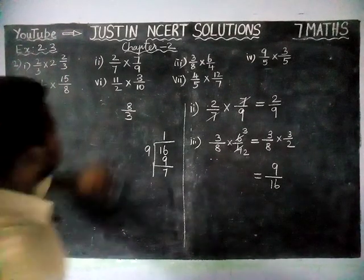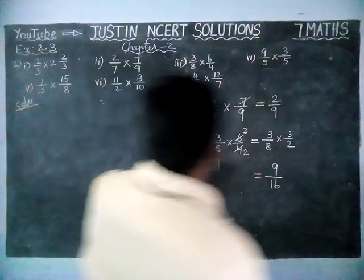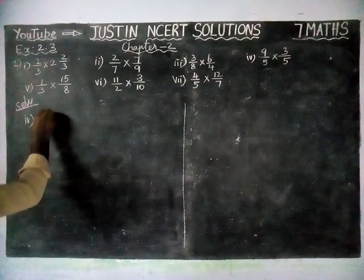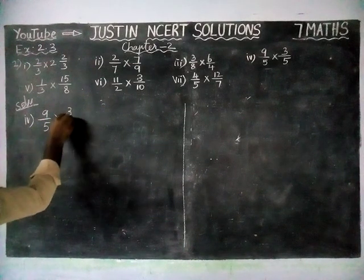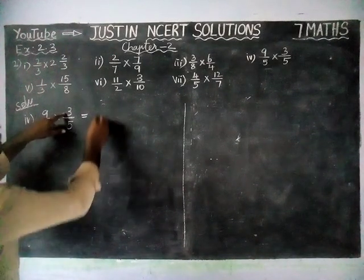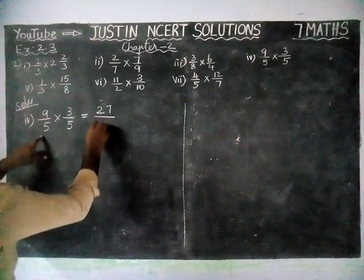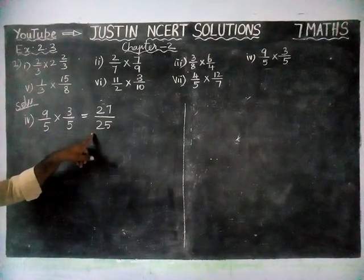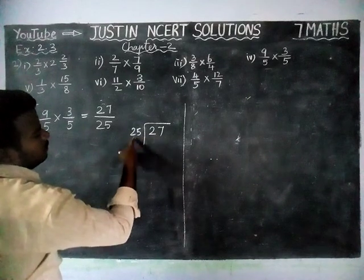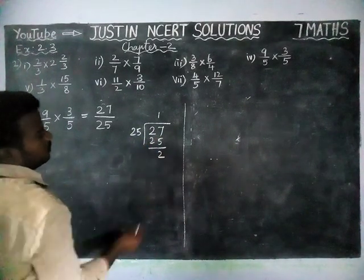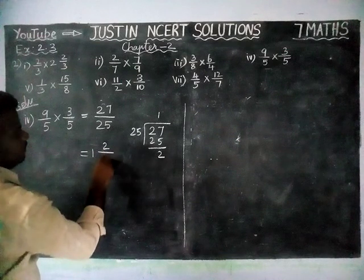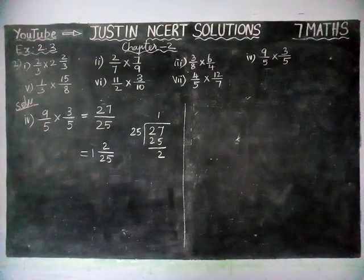Next, fourth question: 9/5 × 3/5 is equal to. Here we cannot simplify any number, so we are multiplying: 9 × 3 = 27, divided by 5 × 5 = 25. This is an improper fraction, so we have to convert into mixed fraction. In 27, we have only one 25, and the remaining is 2. So the quotient comes in the whole part, the remainder comes in the numerator, and the divisor comes in the denominator. So 1 2/25 is the answer for the fourth question.